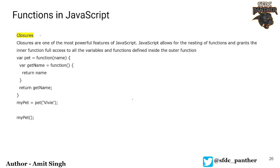Now let's talk about function closures in JavaScript. Closures are one of the most powerful features of JavaScript. If you have a variable inside an outer function, you can access that variable inside an inner function as well. In this example, we have an outer function called 'pet' that accepts a parameter called 'name', and an inner function called 'getName' that returns that name.